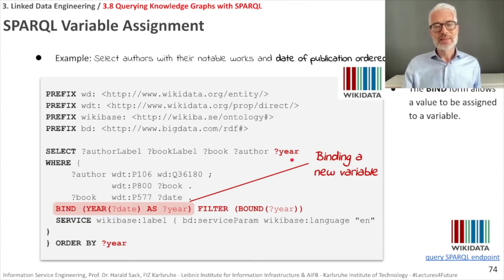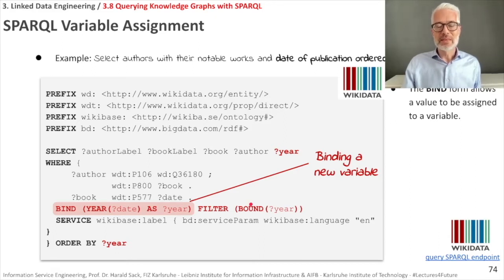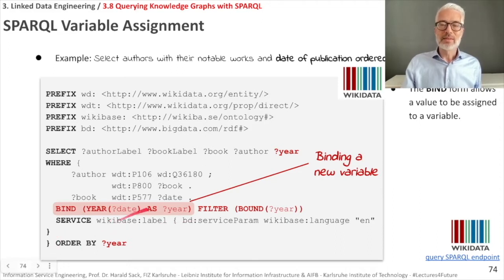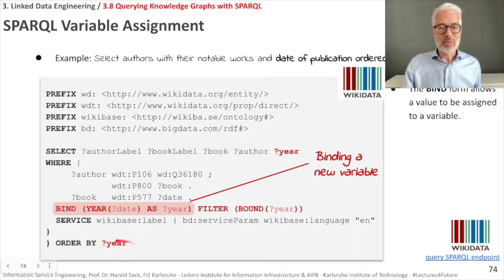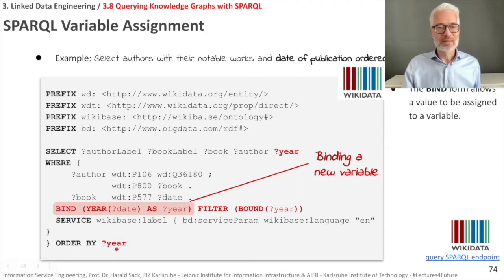I also filter to ensure the year is not empty — sometimes a year variable may be unbound. I look for entries where the year really is bound to an expression using the BOUND() function. Since the year variable now appears in my output variables, I can order by that expression. The key point is: I couldn't write ORDER BY YEAR(date) directly — I have to use a variable.